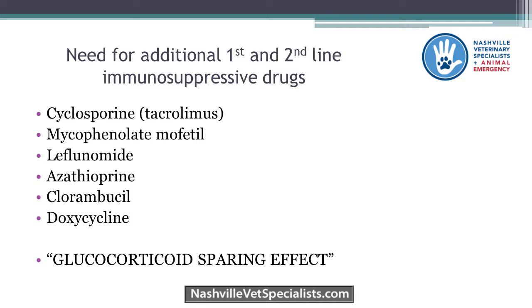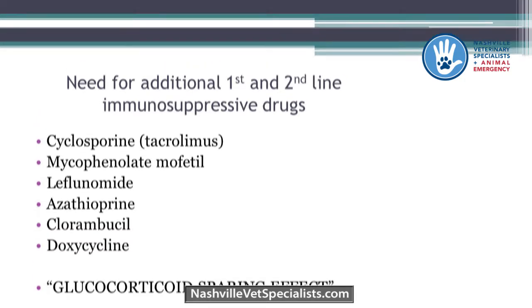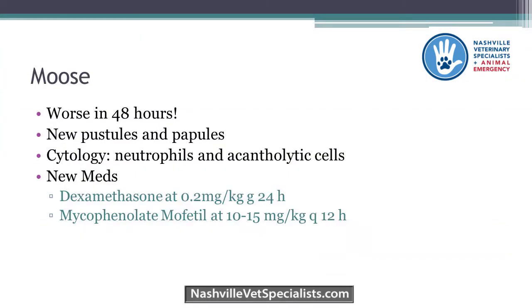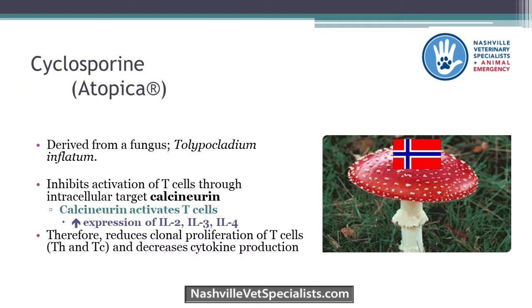Back to Moose — he was worse at 48 hours. He had new pustules and papules everywhere, still painful feet. Cytology again showed neutrophils and acantholytic cells, no infectious organisms. So we switched to dexamethasone at 0.2 mg/kg every 24 hours and added a second agent — a mystery drug, not cyclosporine. We'll talk about cyclosporine first, then get to the others.